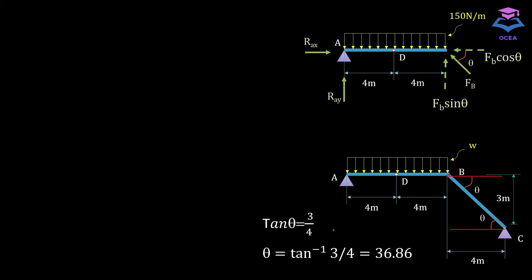Considering that free body diagram, we first need to resolve FB into its X and Y components. To do so we need angle theta, which can be obtained by considering the geometry of the frame. Using tangent of theta, which equals perpendicular divided by base, and solving gives theta equal to 36.86°. Now with theta known, we can resolve FB into its X and Y components.